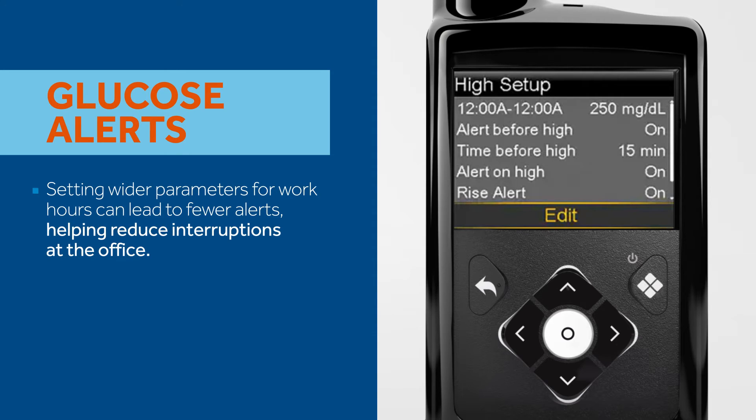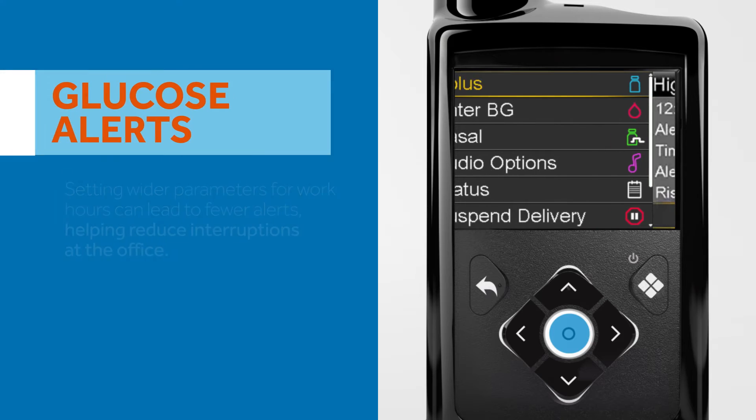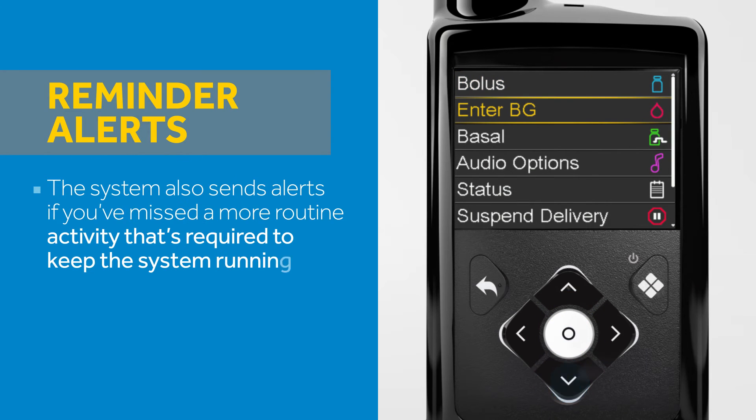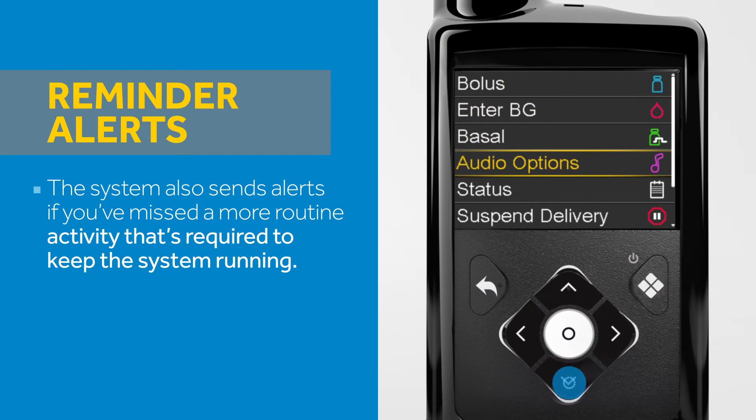Another customization you can try, if you get a lot of glucose alerts, is to turn off predictive alerts.